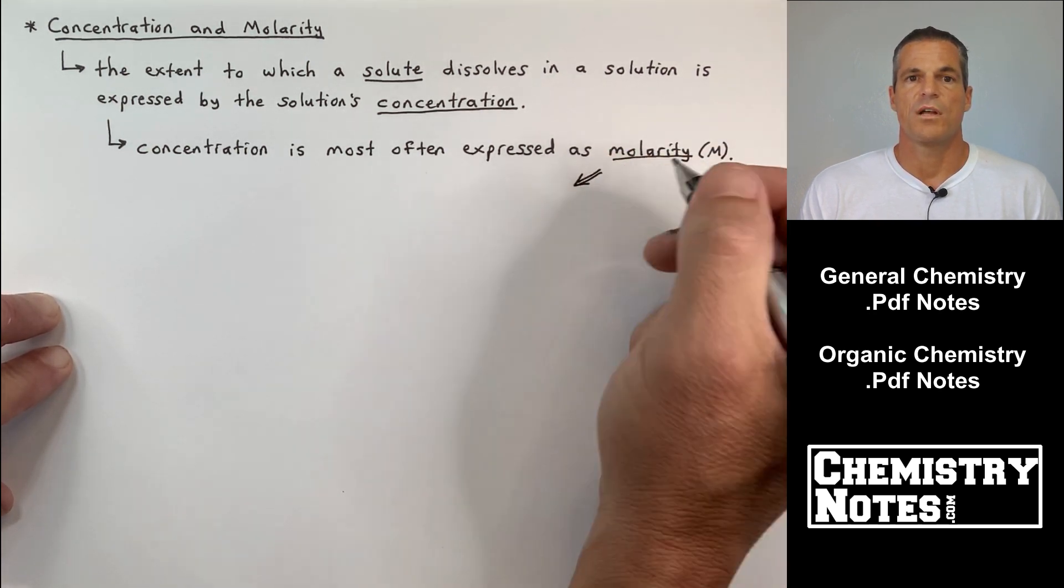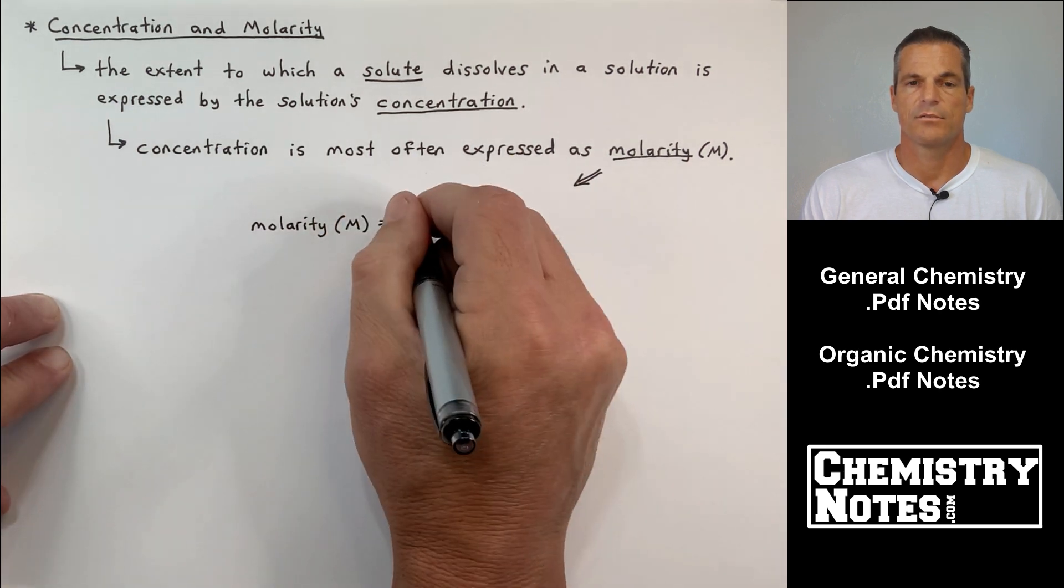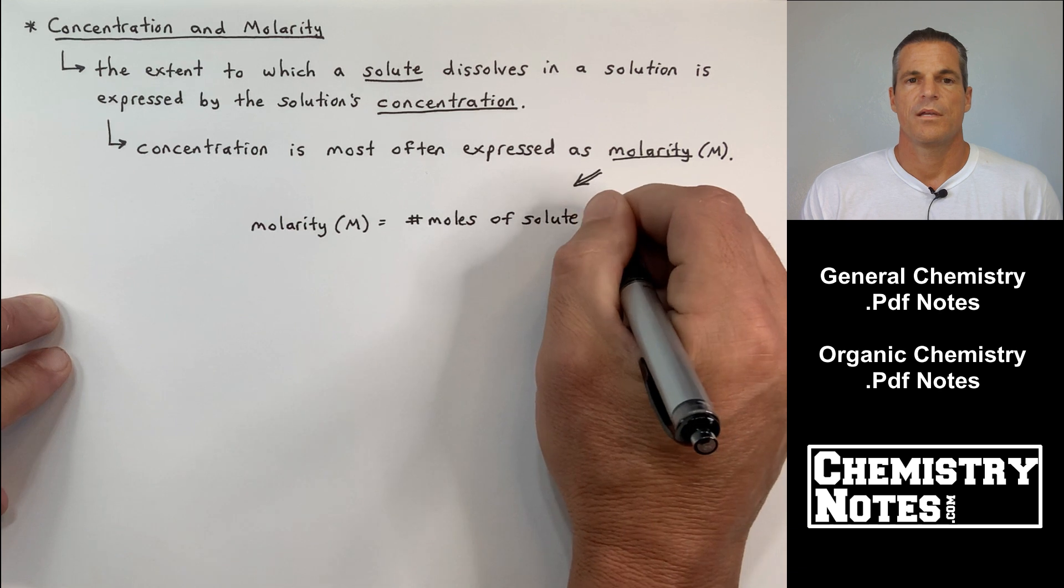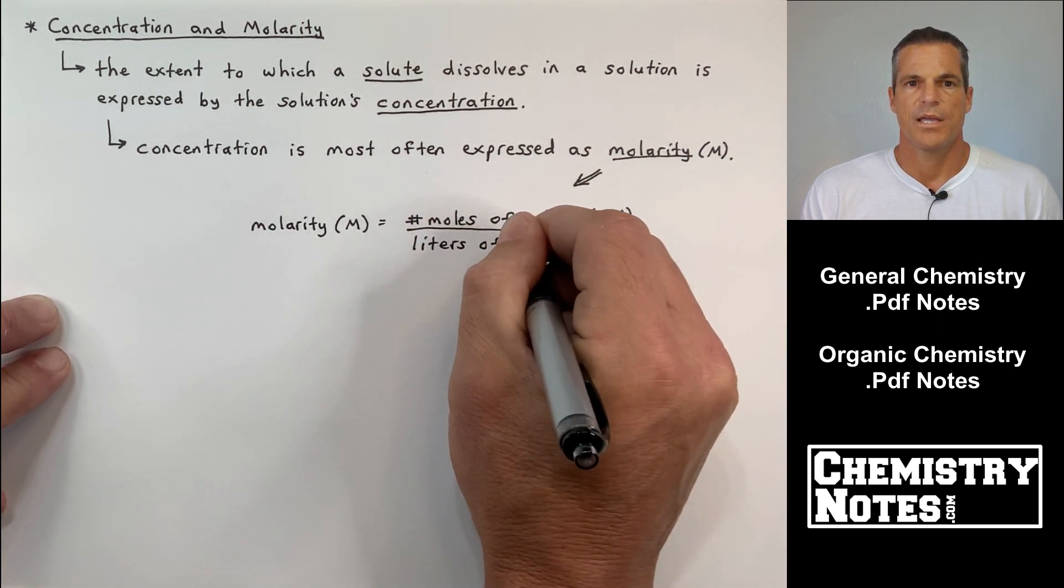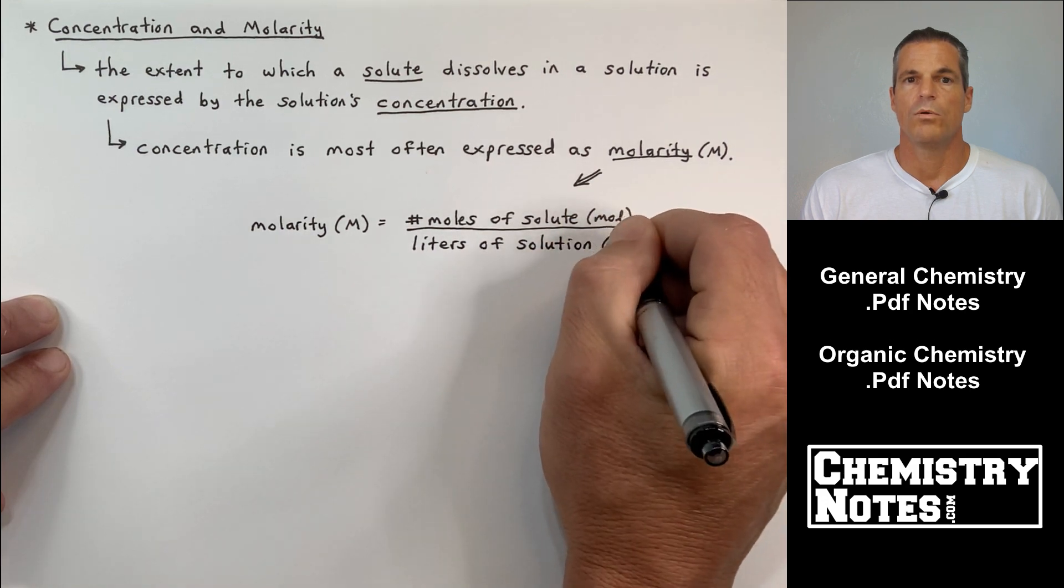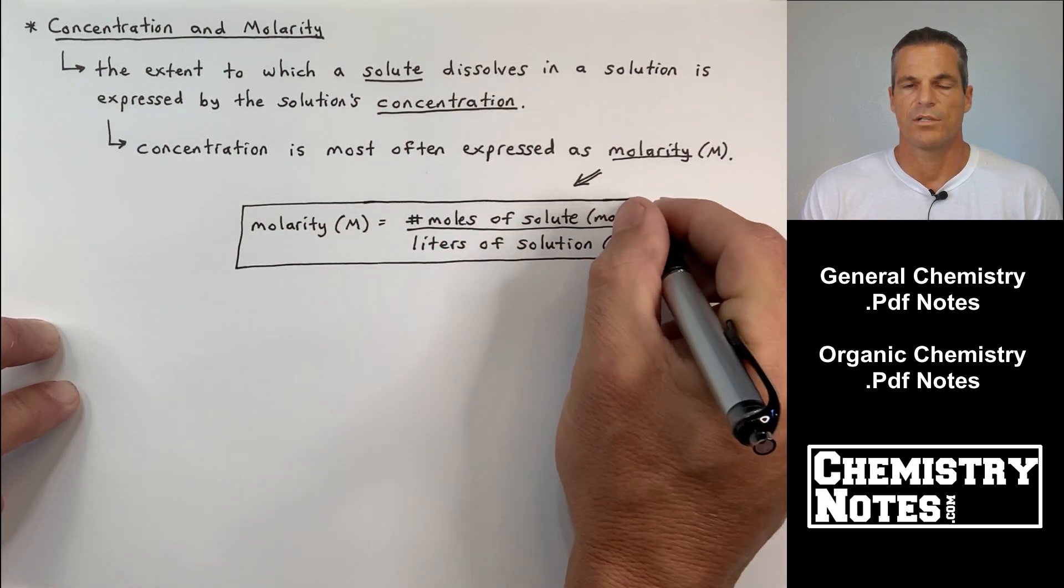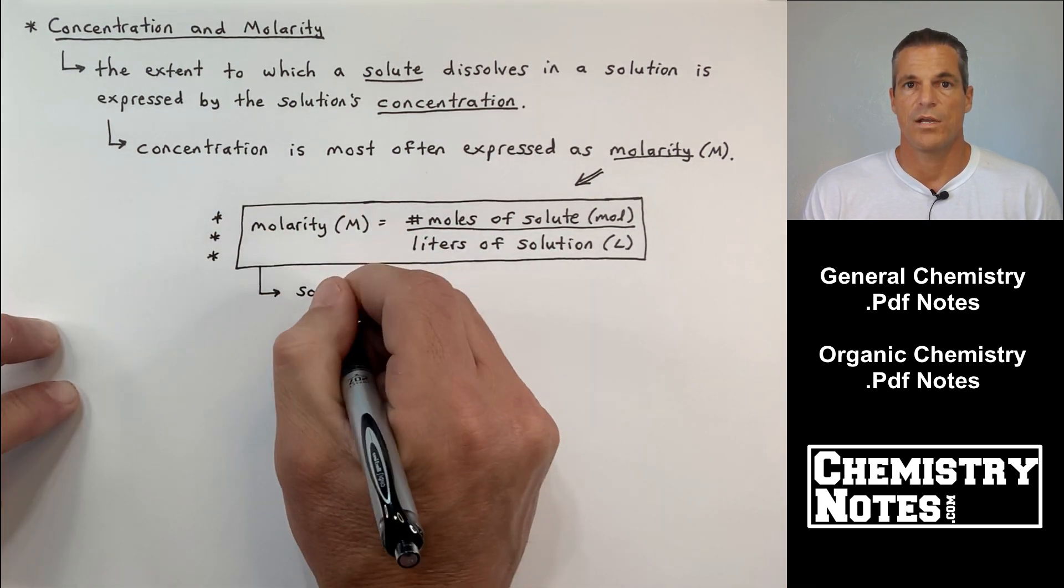Concentration is most often, however, expressed as molarity. So molarity gets a big M symbol, and here is the equation for molarity. Molarity, big M, is moles of solute per liter of solution. So you definitely want to remember that boxed equation right there.